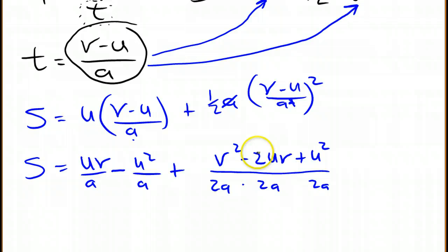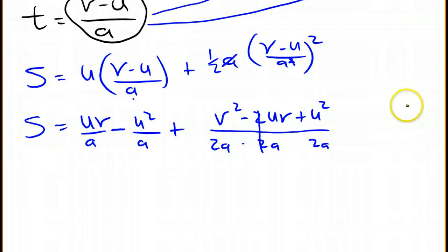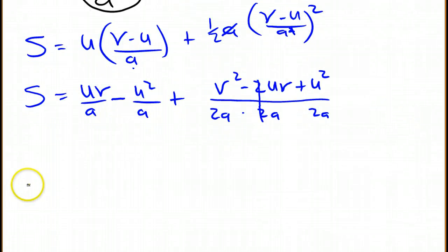Now that means this 2 goes out. And now we can do a rewrite and start cleaning things up. So I have an a everywhere in every denominator, so I'm just going to go ahead and multiply that through on the other side.